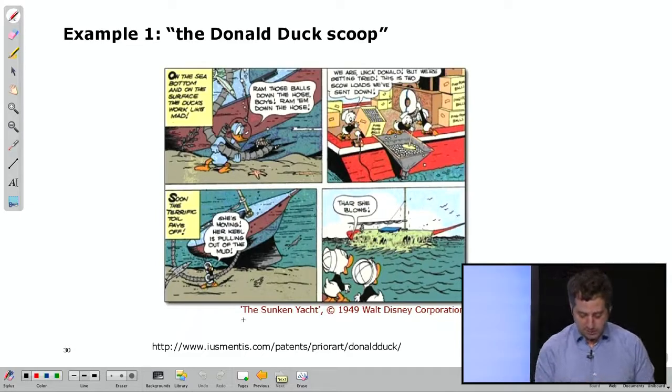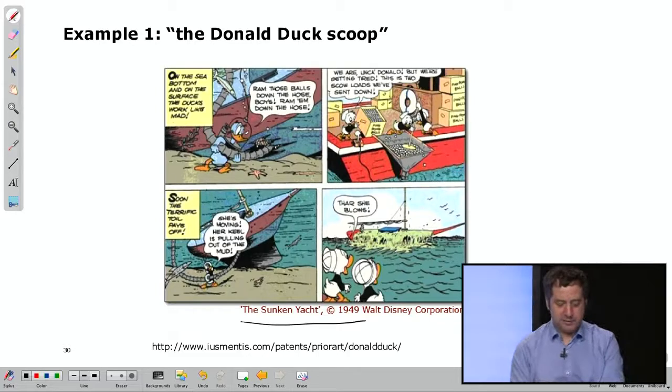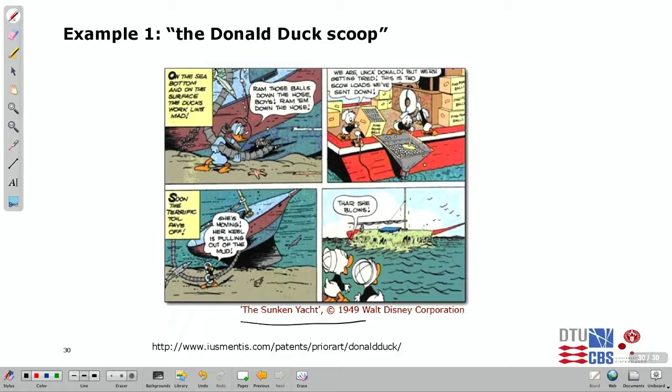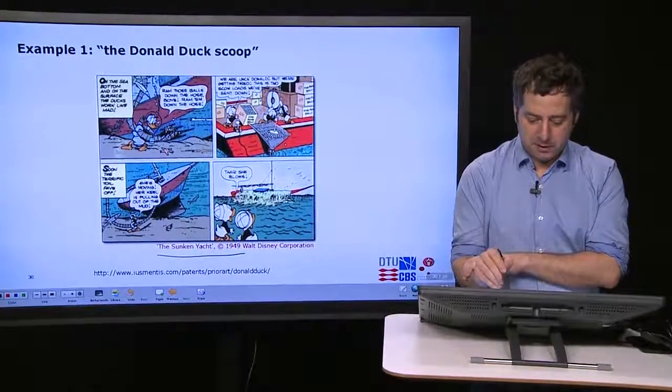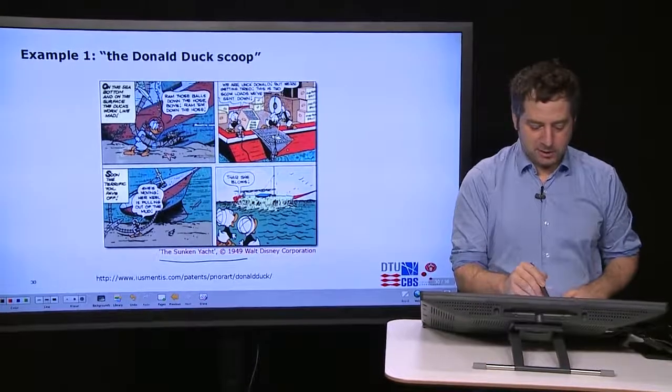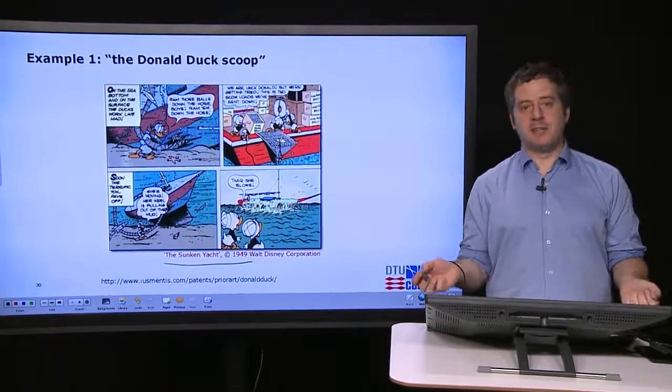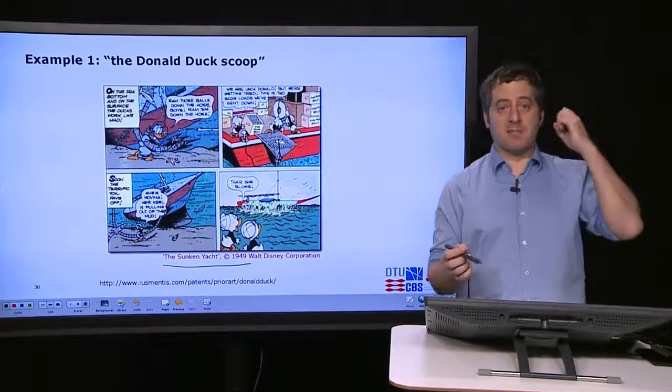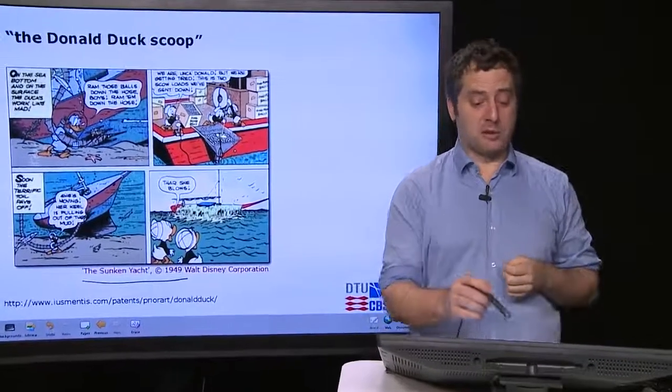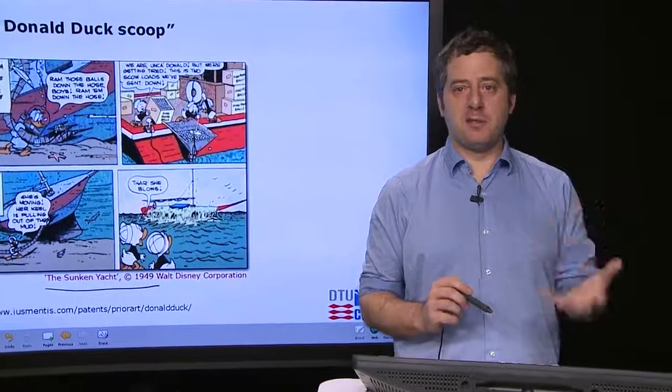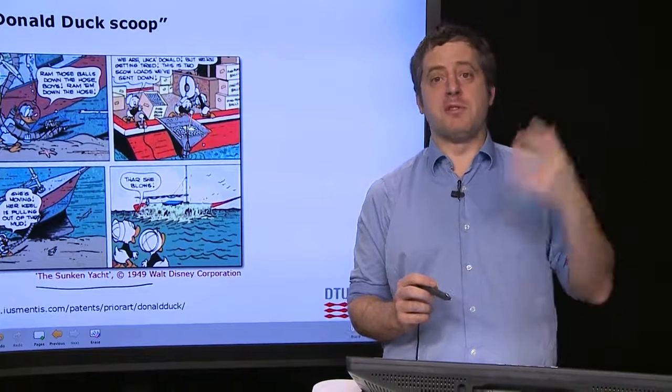That was Donald Duck. We had this cartoon from 1949, The Sunken Yacht. Actually Donald Duck and the three little nephews, they want to retrieve a sunken yacht. And to do that, they throw in ping pong balls. We see here, Donald Duck is under the water and there's the tube throwing in ping pong balls. The kids are throwing the ping pong balls down, the balls are going into the hull of the boat and the boat comes up. That is prior art. But it's a cartoon. It's a cartoon, but as we said at the beginning, an invention is something that comes out from your head. It's an idea that comes out from your intellect. It's an idea that comes out from your brain.